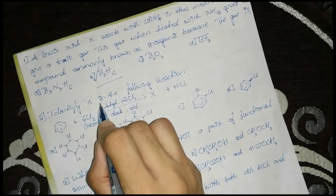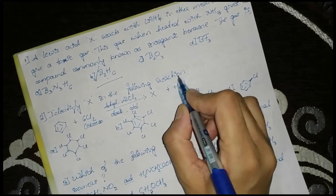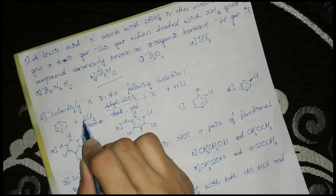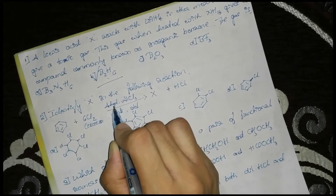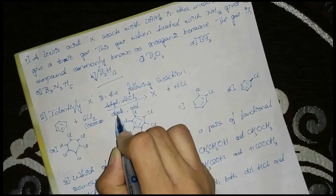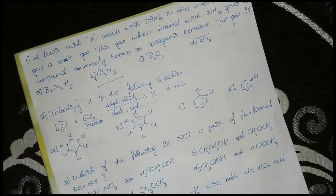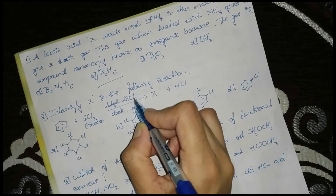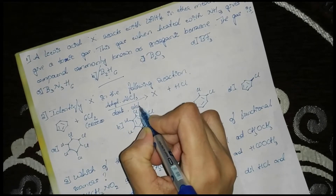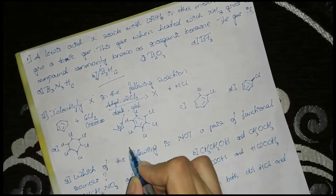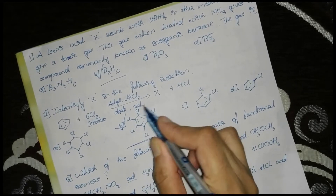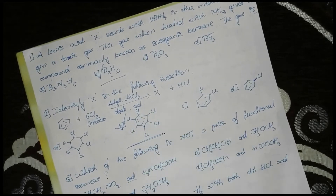Next: identify X in the following reaction. Benzene reacts with excess Cl2 — 6 Cl2 in excess — in the presence of anhydrous AlCl3 under dark and cold conditions. The answer is option B: hexachlorobenzene, C6Cl6.